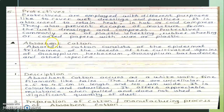Absorbent cotton consists of the epidermal trichomes of the seeds of the cultivated species Gossypium herbaceum and other Gossypium species — this is the biological source. The description: absorbent cotton appears as white, soft, fine filament-like hairs. The hairs are unicellular, 2.5 to 4.5 cm in length and 40 micrometers wide.